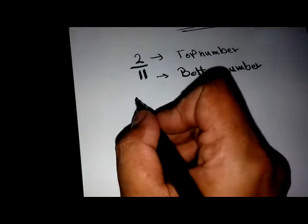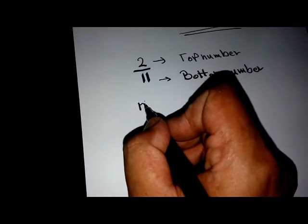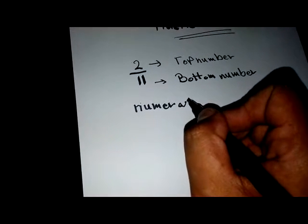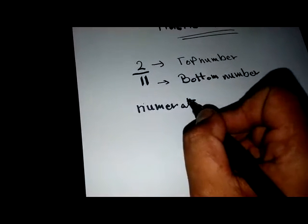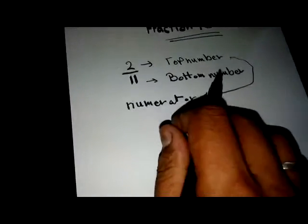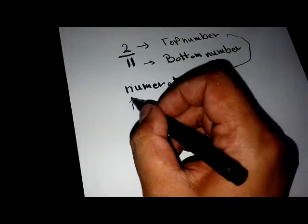The top number is called the numerator. The bottom number is called the denominator.